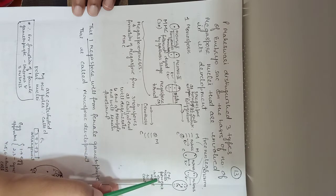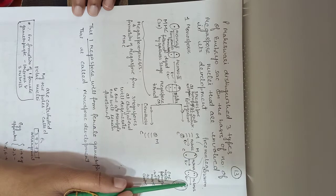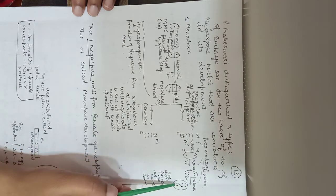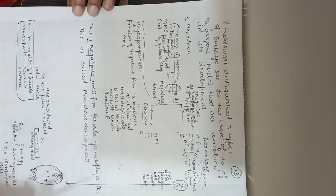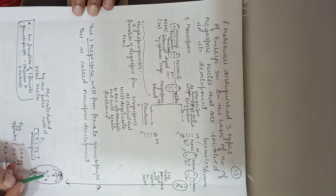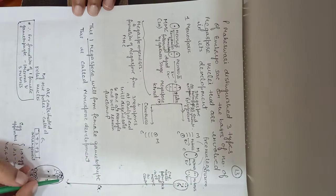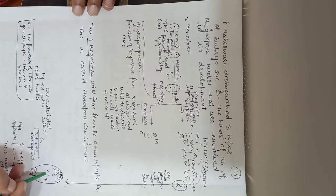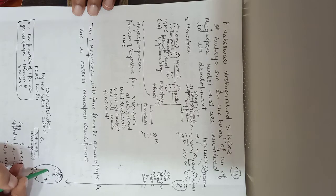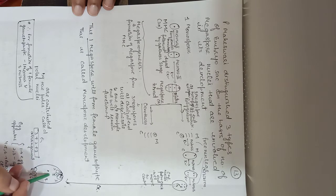One nucleus from each end — from the micropylar end and from the chalazal end — will move to the center. They will form polar nuclei, because they are coming from each pole.